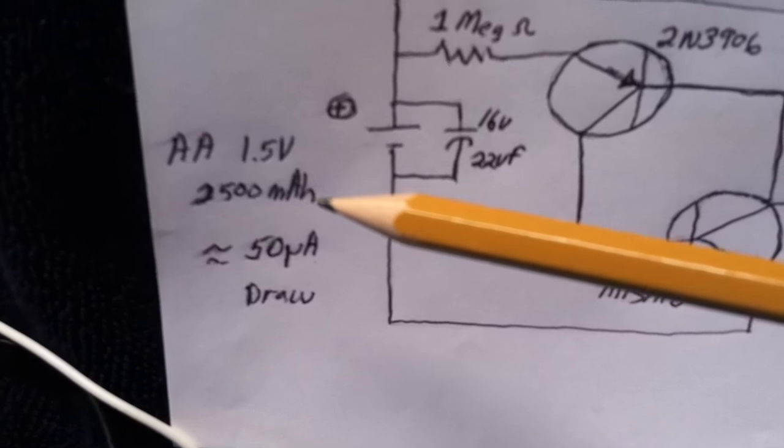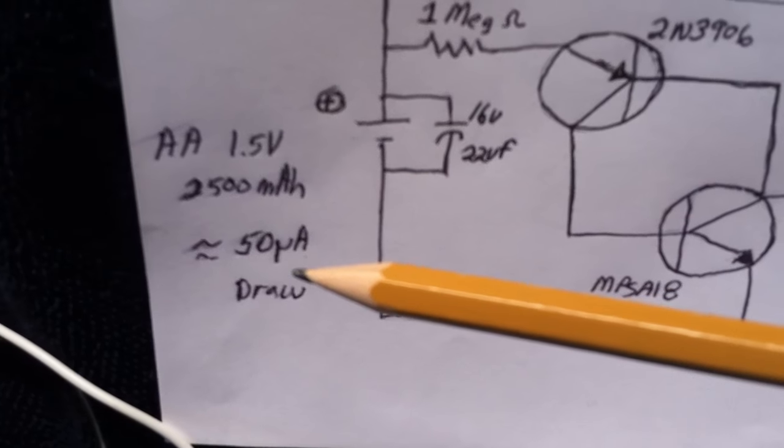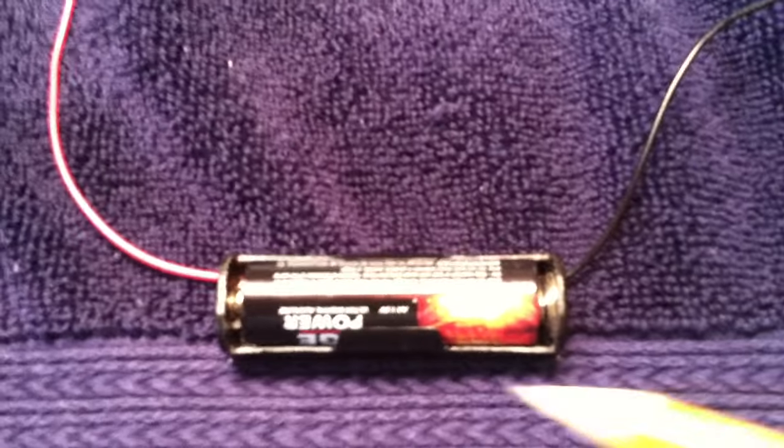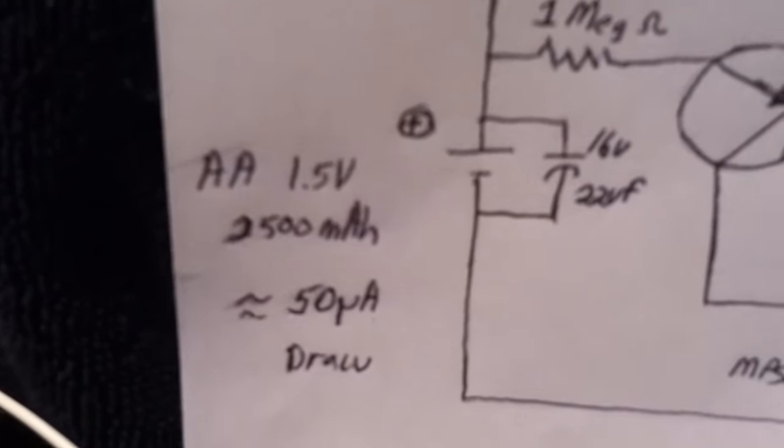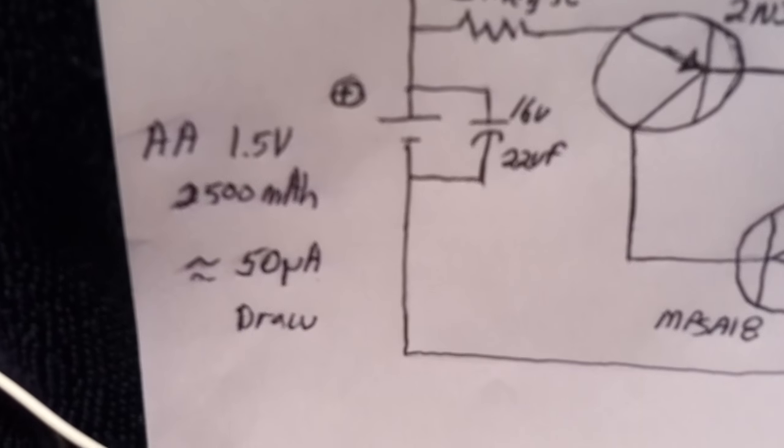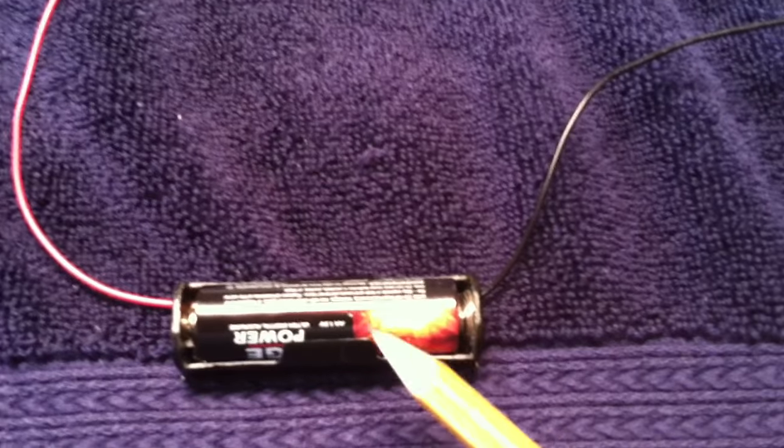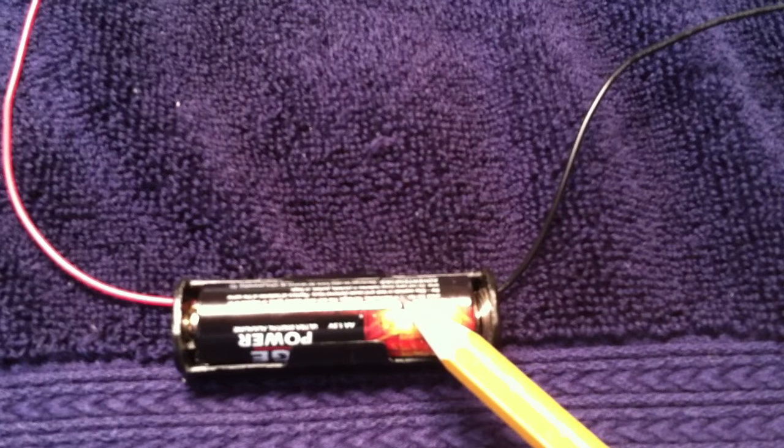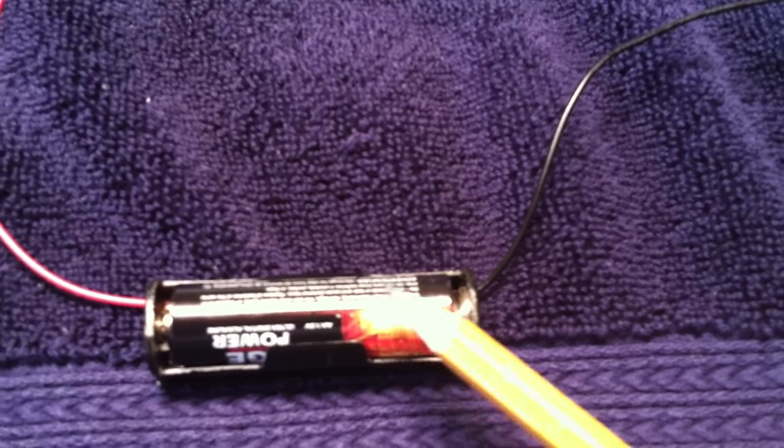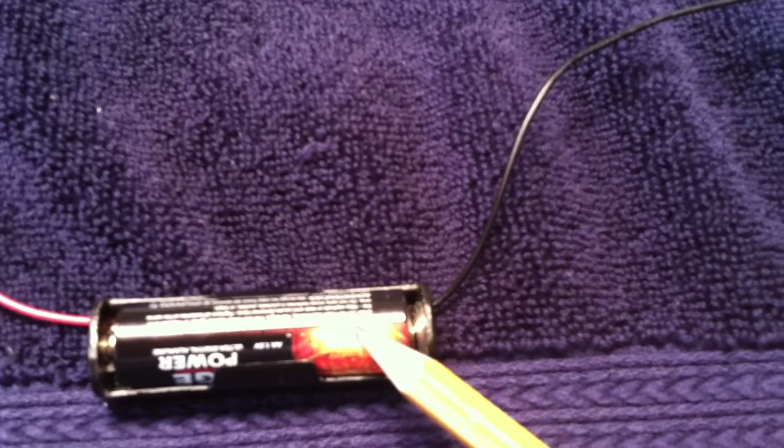It's a 2500 milliampere hour alkaline AA. It's just a dollar store alkaline, but that's what they're rated at, about 2500 milliampere hours. It's not lithium, it's alkaline, but these are now rated up to 10 years of shelf life. That's what I was interested in - a battery that would sit on the shelf for 10 years and still have power in it.